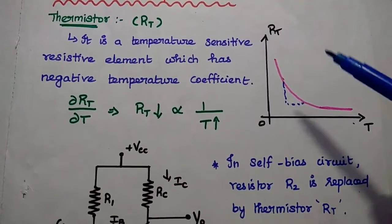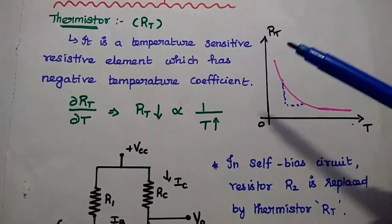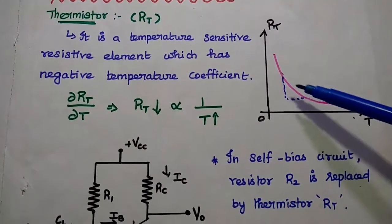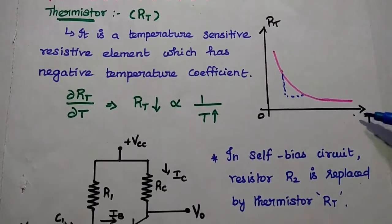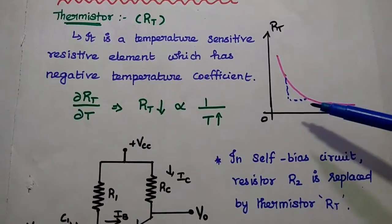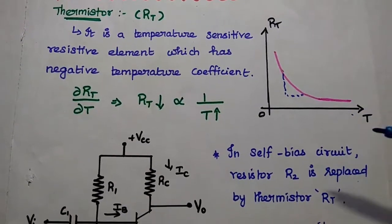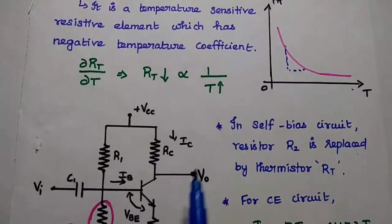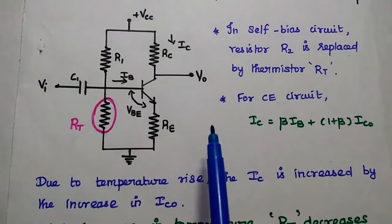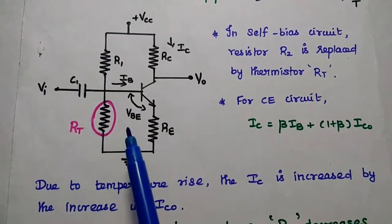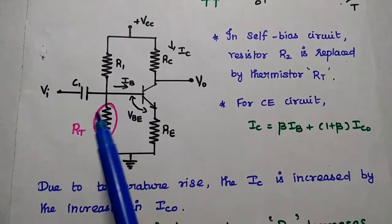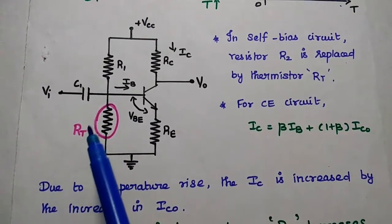This is the temperature versus resistance graph for the thermistor. The resistance value decreases exponentially with increasing temperature. Its slope is negative — that's why it is called a negative temperature coefficient. We are going to use this thermistor as a compensating element in a self-biased circuit, that is a voltage divider circuit. In this circuit, the R2 resistor is replaced with the thermistor resistance.